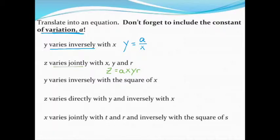Next up, we have a couple of things going on. This time we see Y varies inversely. So there's our keyword that tells us again, it's going to be Y equals A. But this time it varies inversely with the square of X. So A over X squared.